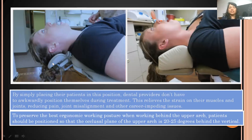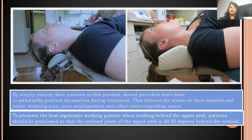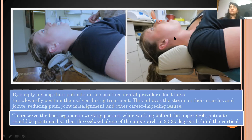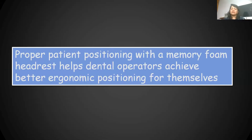Regarding the articulated headrest of the dental chair — it is sometimes difficult to manipulate and may put tremendous pressure on the patient's neck during long procedures of one to one and a half hours. You can replace this with a memory foam, which helps relieve the strain. The patient can be placed in an ideal working position with the chin slightly raised and the maxillary arch at an angle of 20 to 25 degrees to the vertical. This gives very good working ergonomics, allowing the operator to sit in the 12 o'clock position and work for at least one to one and a half hours without problems.